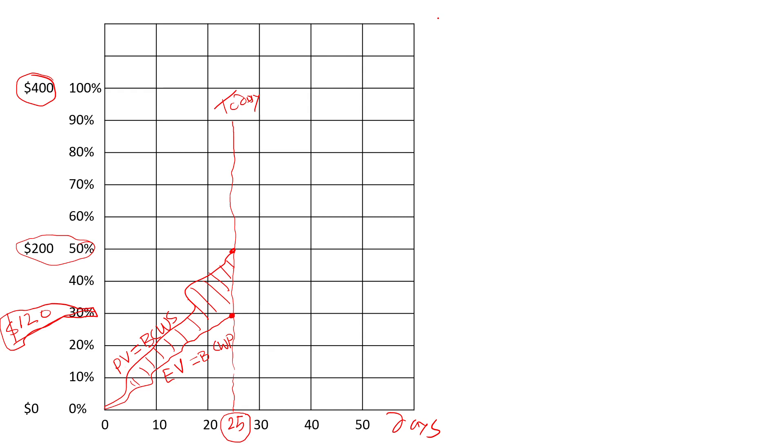There is a measure, there is a measurement for that which is called the schedule variance. We are behind the schedule. We're just trying to put a number in there so we understand a little bit easier. The formula for that is the earned value minus the PV, the planned value.